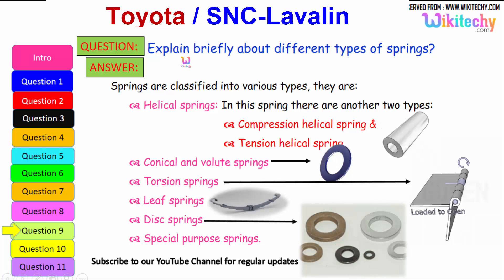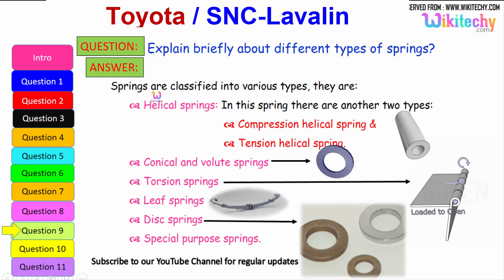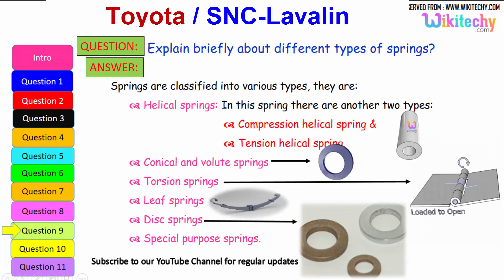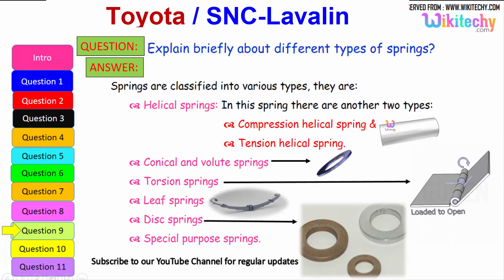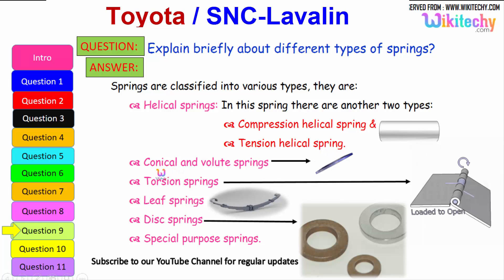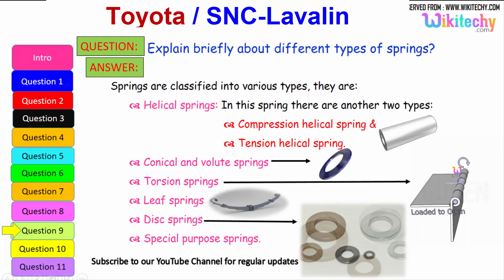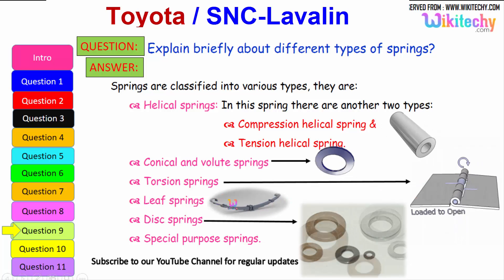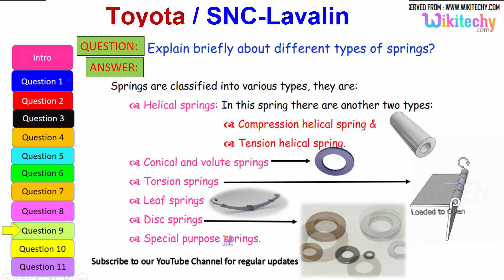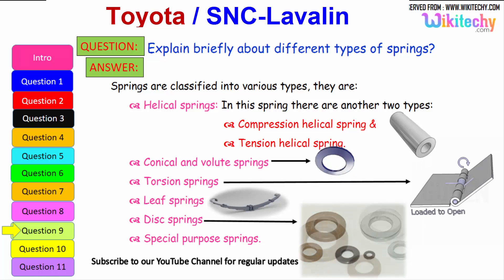Now let us briefly see the different types of springs. Springs are classified into various types: the first is helical springs, which have two sub-types — compression helical springs and tension helical springs. The next is conical volume springs, followed by torsion springs, leaf springs, and disk springs. There are also additional springs called special purpose springs. These are the different types of springs available.